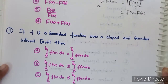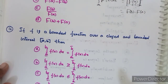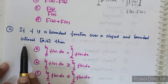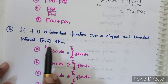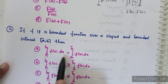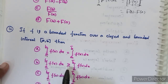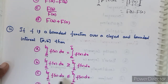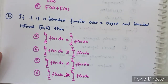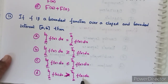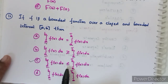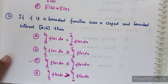Twelfth question: if F is a bounded function over a closed and bounded interval [a,b], then — lower Riemann integral equals upper Riemann integral, lower ≥ upper, lower ≤ upper, or lower > upper? Option C is correct: lower Riemann integral is always less than or equal to upper Riemann integral.